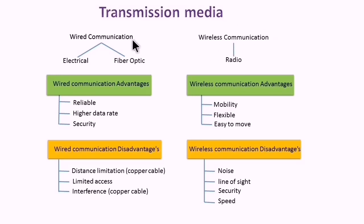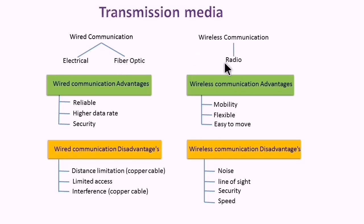With wired communication, either electric signal through cables or light signal through fiber optic. While wireless communication utilizes radio.